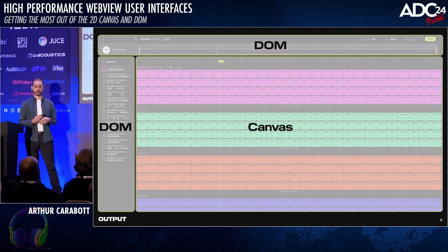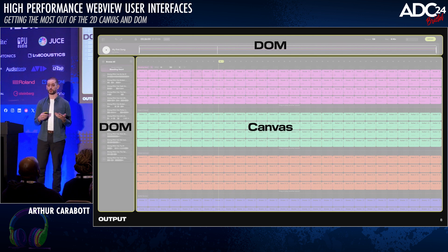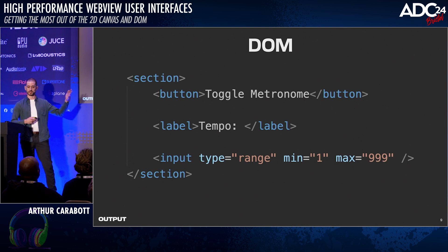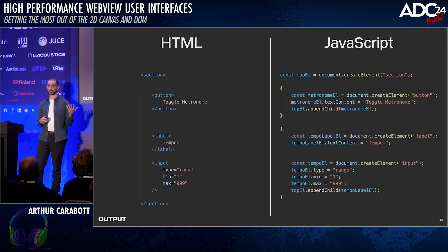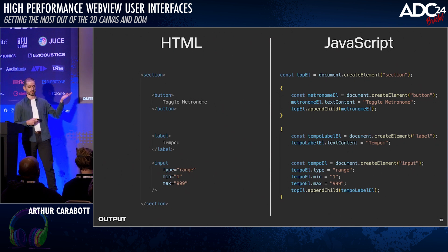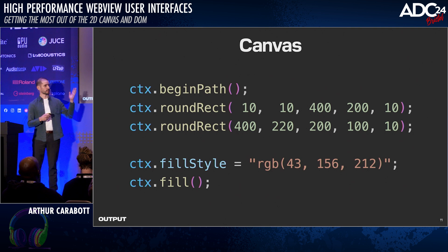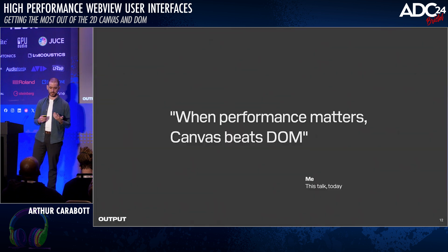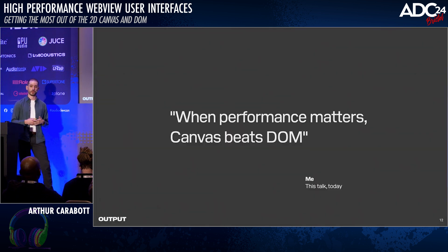The two primary things are the DOM and the canvas. The DOM stands for the document object model, and it looks something like this — using HTML elements like sections, buttons, labels, inputs, etc. You can create this either using HTML or procedurally using JavaScript. Whereas canvas code looks a bit more like primitive graphics rendering calls. The canvas is really what you want to reach for when performance is a concern — it's the kind of thing used behind big web apps like Google Sheets.